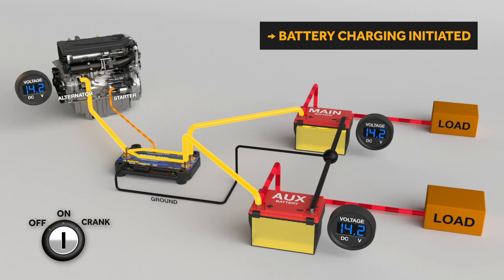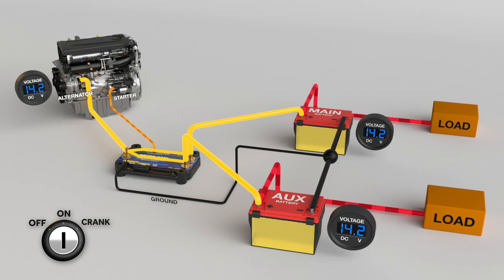Once the dual rectifier senses alternator voltage rising, the excitation circuit turns off and the default power blocking firmware takes over.